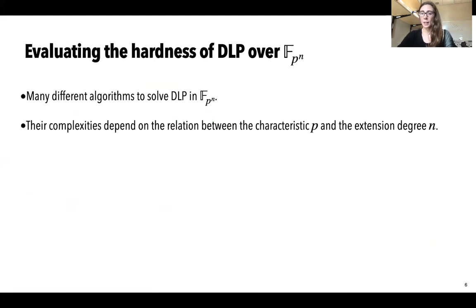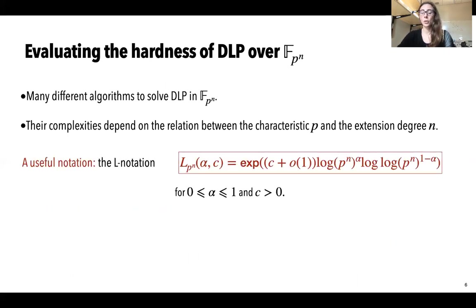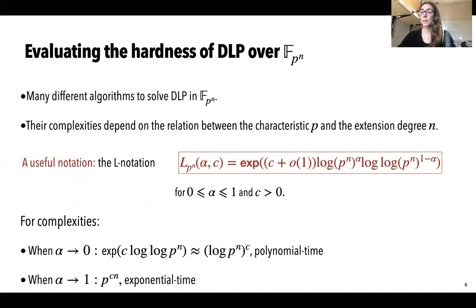Evaluating the hardness of DLP over a finite field FP^N is not easy, because many different algorithms exist to solve DLP in FP^N, and the complexities of these algorithms depend on the relation between the characteristic p and the extension degree n. To discuss these complexities, we introduce the L-notation. This expression uses two parameters: alpha, which varies between 0 and 1, and a positive constant C. When alpha approaches 0, we get polynomial time complexity; when alpha approaches 1, we get exponential time complexity. When alpha is in between 0 and 1, we have sub-exponential time complexities, which applies to all algorithms discussed in this talk.